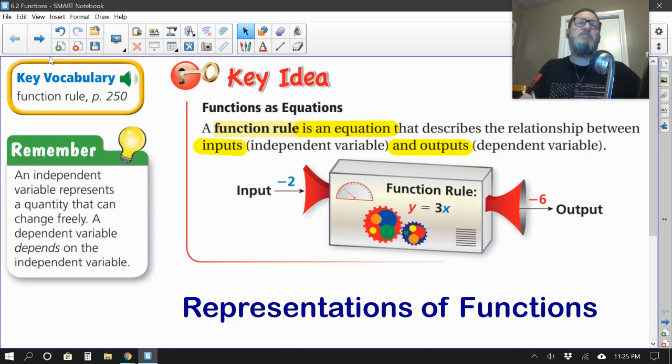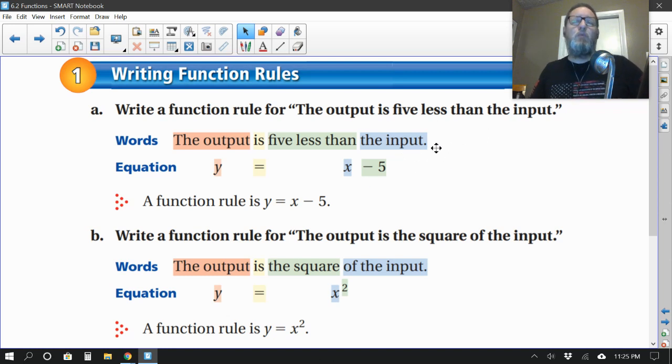All right, well, let's get started. So one of these many ways to represent functions is just as like a little statement or sentence. So here, they want us to turn this particular sentence, write a function rule for the output is 5 less than the input. All right, so as you can see here, the sentence itself breaks down into an equation. So the output, that's always going to be our y variable, is means equals.